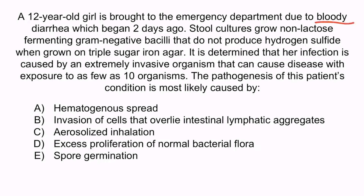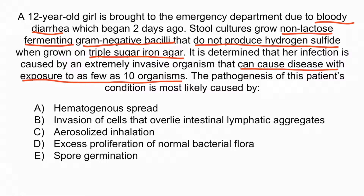The child has bloody diarrhea, which should make you think of an enteric-related infection such as E. coli, Salmonella, Shigella, or Campylobacter. Stool cultures grew non-lactose fermenting gram-negative bacilli that did not produce hydrogen sulfide on TSI agar. E. coli ferments lactose, Salmonella produces hydrogen sulfide on TSI agar, and Campylobacter is comma-shaped — so this information helps eliminate each possibility from the differential, leaving us with Shigella. The fact that the organism can cause disease with as few as 10 organisms is a clue that it's acid-resistant, so it can easily pass gastric acid and cause infection.